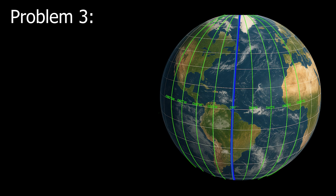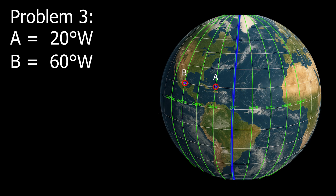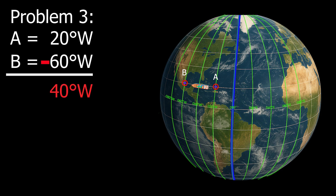Example number three: Point A, 20 degrees west. Point B, 60 degrees west. The difference is 40 degrees. The D-long is 40 degrees west.